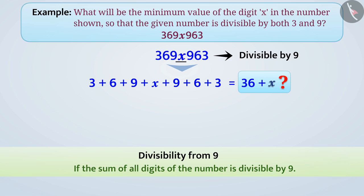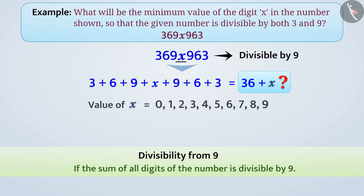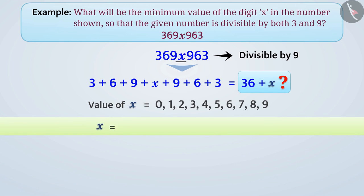Since x represents a digit, its value can be 0, 1, 2, 3, 4, 5, 6, 7, 8, or 9. But there is also a restriction on the value of x, such that the sum 36 plus x must be divisible by 9. By keeping the value of x as 0, we get the sum 36, which is divisible by 9. So the value of x can be 0.